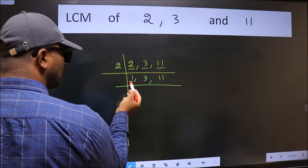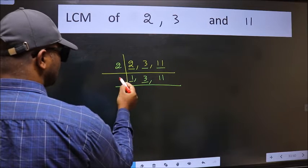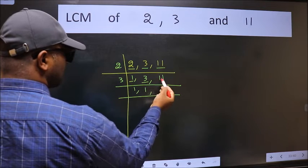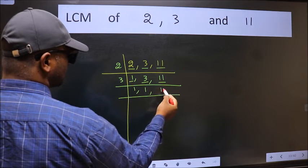Now we got 1 here so focus on the next number 3. 3 is a prime number so 3 divided by 3 is 1. The other number 11 not divisible by 3 so you write it down as it is.